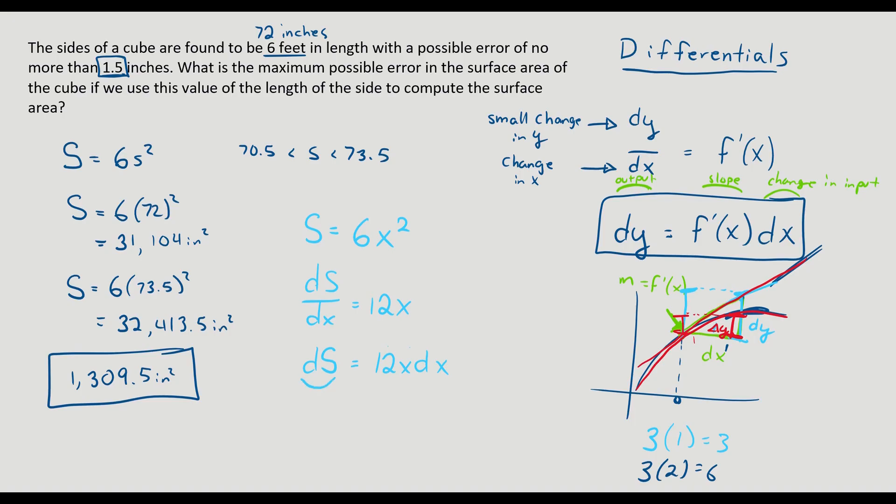So now I can see the change in surface area is equal to 12 times my x times my side value times the change in x. So I can plug in my numbers to figure out what is that biggest possible change in x. So I go 12 times the ideal side length, so like where I'm starting at, times how much can x change? How much can it vary? It can vary by 1.5. So I multiply those 12 times 72 times 1.5. And I get 1296 inches squared because we're dealing with surface area.